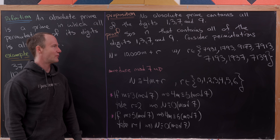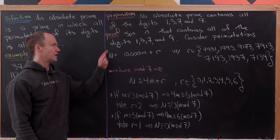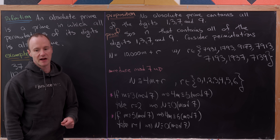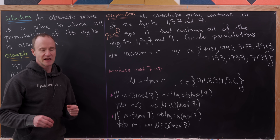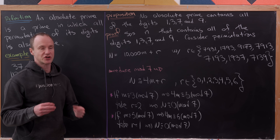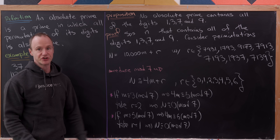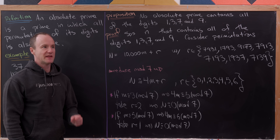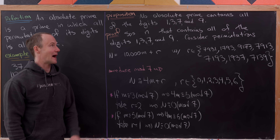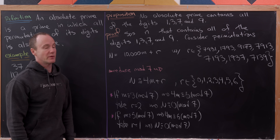So going back to the top: we started with a number containing the digits 1, 3, 7, and 9, and showed it's always possible to construct a permuted version of that number that's divisible by 7. That means we don't have an absolute prime, which is essentially what we wanted to show.